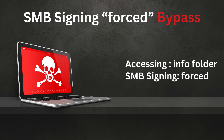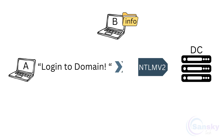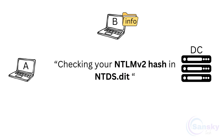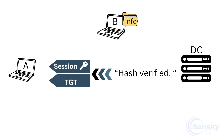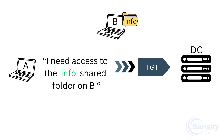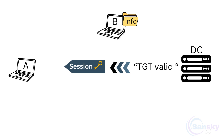Now let's move on to the next scenario of the SMB relay attack, where SMB signing is enforced. As before, client A logs into the domain and the DC provides a session key and TGT. A then sends a request to access the shared folder info, typing the correct name this time. The DC provides A a session key, which A and B use for both encrypting and signing the SMB packets.